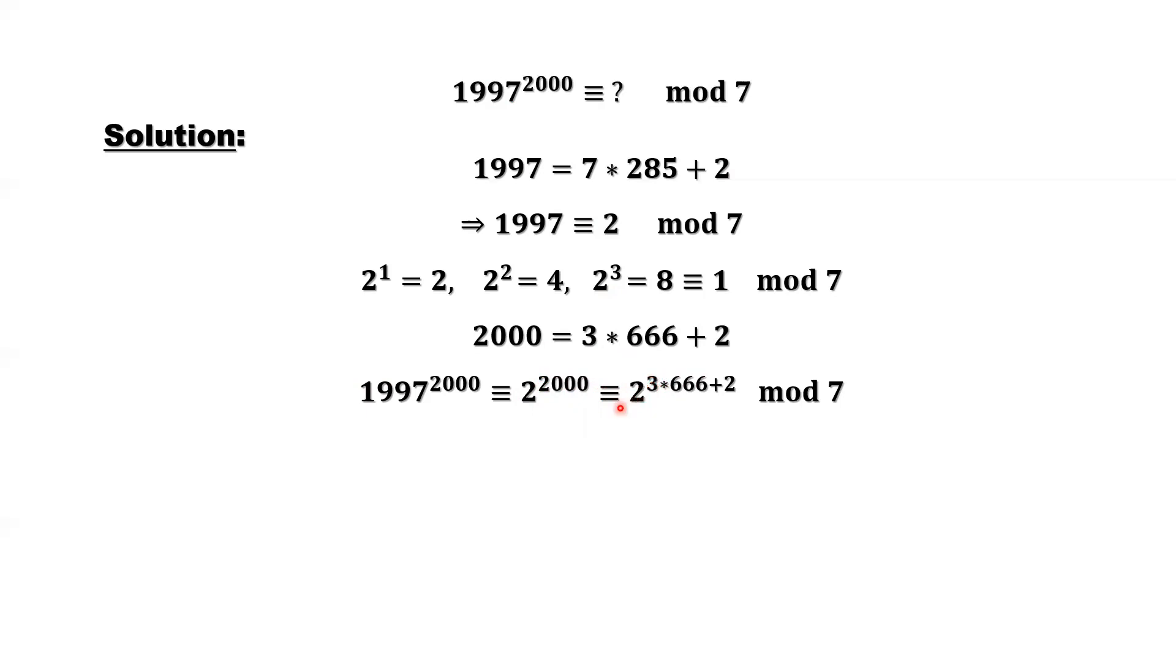Continue to simplify. This is 2 to the power 3, then to the power 666. 2 to the power 3, what is the remainder if divided by 7? We already have here, that's 1. So replace it by 1. 2 to the power 2, that's 4. 1 times 4 is 4. 4 divided by 7, the remainder is 4.